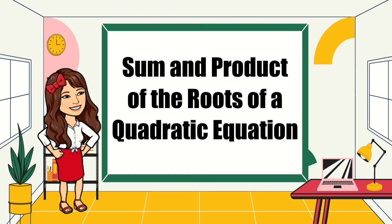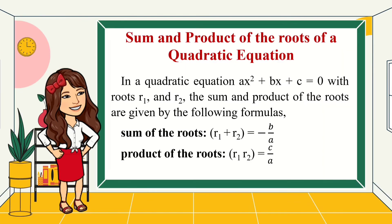Our video is about sum and product of the roots of a quadratic equation. In a quadratic equation, ax squared plus bx plus c is equal to zero, with roots r sub 1 and r sub 2, the sum and product of the roots are given by the following formulas.